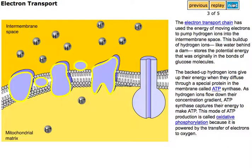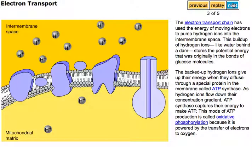The electron transport chain has used the energy of moving electrons to pump hydrogen ions into the intermembrane space. This buildup of hydrogen ions, like water behind a dam, stores the potential energy that was originally in the bonds of glucose molecules.